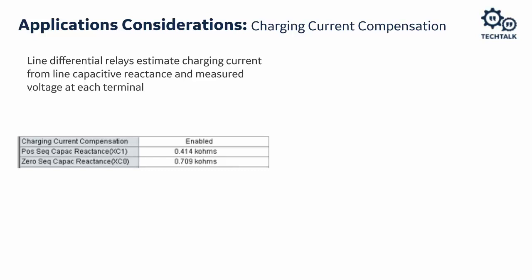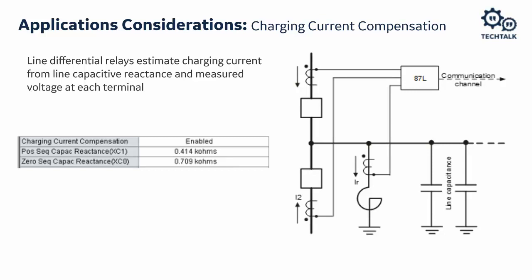A complication arises because the reactor can be switched on or off, and when it is on the effective charging current changes — requiring adjustment of the capacitive reactance setting. With reactors at both ends there are many combinations. To avoid this complexity, the recommended approach is to provide the reactor current as a third input to the 87L relay, which subtracts the reactor current directly. This makes the charging current a steady, known value without needing to monitor reactor breaker positions or switch settings.